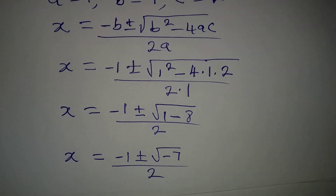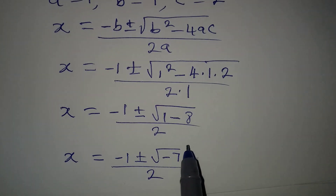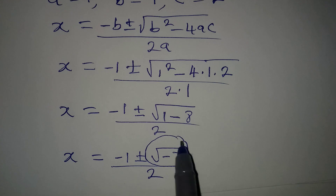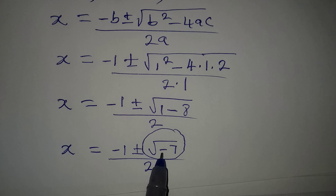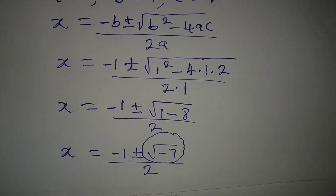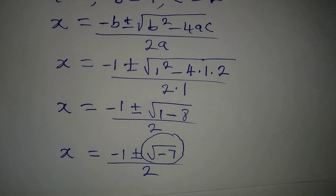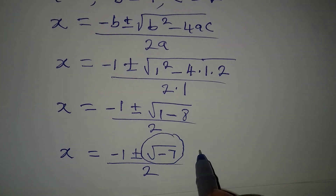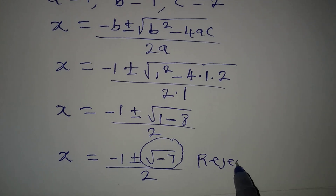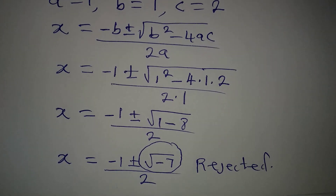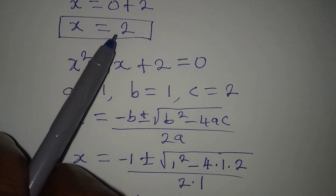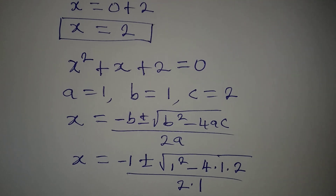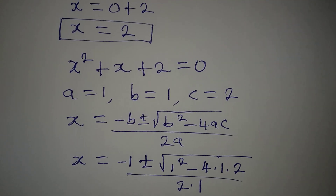Anytime you have a square root of a negative number, it gives you a complex solution, because the negative under the square root yields an imaginary number. So this factor has to be rejected, and the only real solution we have is x equal to 2.